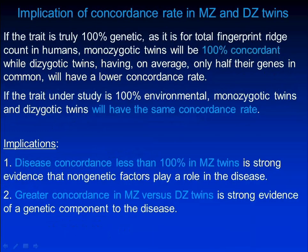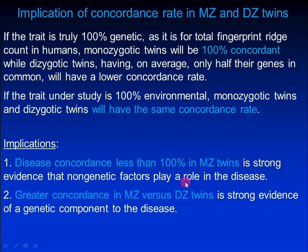If the trait is truly 100 percent genetic, monozygotic twins will be 100 percent concordant while dizygotic twins will have a lower concordance rate. If the trait is 100 percent environmental, monozygotic twins and dizygotic twins will have the same concordance rate. Importantly, disease concordance less than 100 percent in monozygotic twins is strong evidence that non-genetic factors play a role in the disease.